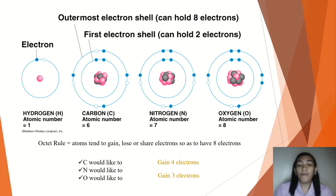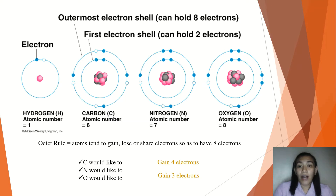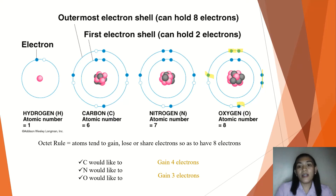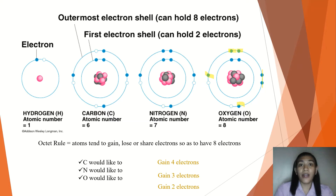Oxygen has the atomic number of eight. It has two core electrons — the innermost electrons. Counting the valence electrons: one, two, three, four, five, and six. Six valence electrons. So oxygen would want to gain two electrons to satisfy the octet rule.